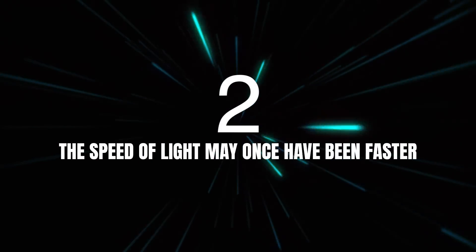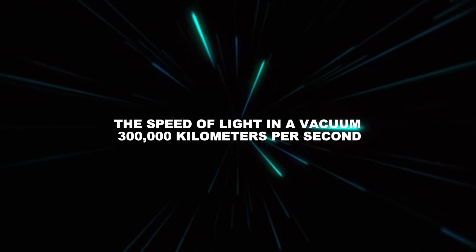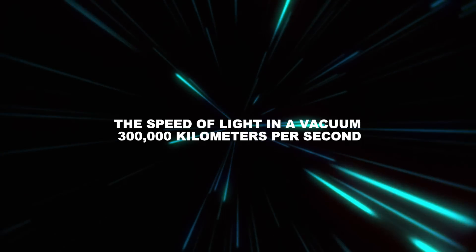Number two. The speed of light may once have been faster. If you've been following the channel, you're probably familiar with the fact that the speed of light in a vacuum is 300,000 km per second, making it the fastest thing in the universe.